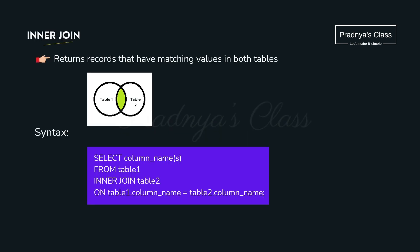Let's move ahead with inner join. Inner join gives us the matching records from both tables — meaning only the common records from both tables are displayed. The syntax is: select star from table one, then inner join, then table two. We need matching records only, so we use the on clause. In the on clause we write the condition comparing the common column from table one equal to the common column from table two.